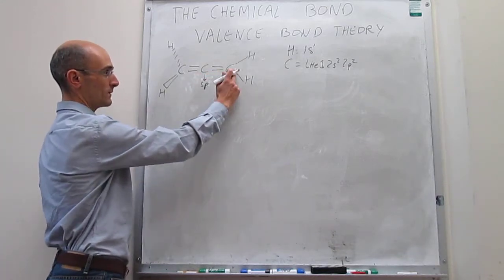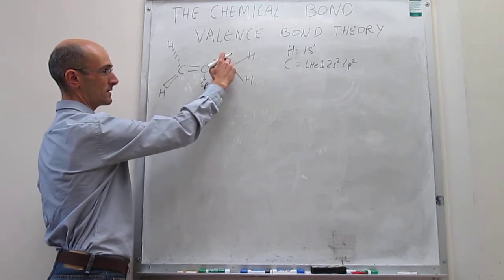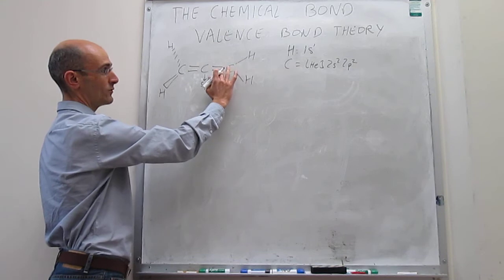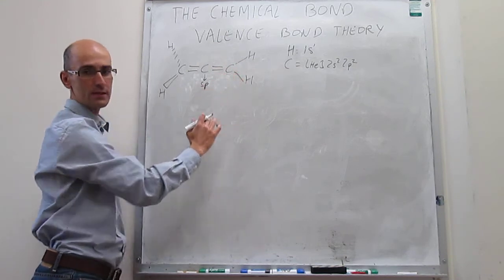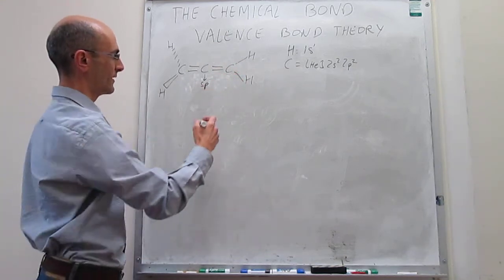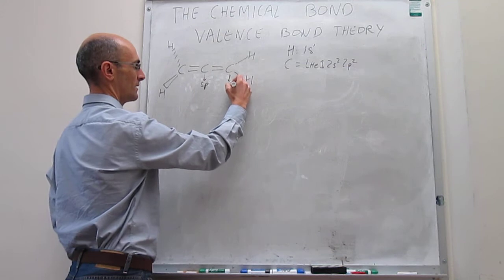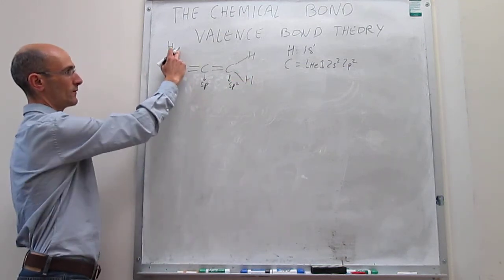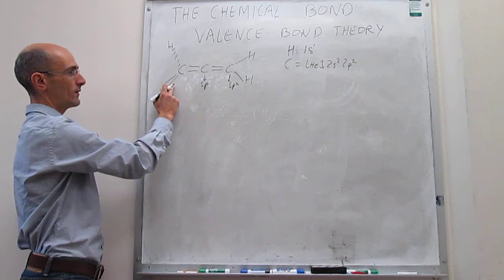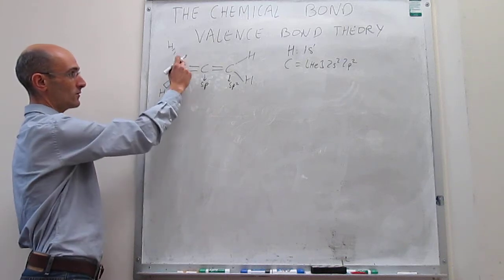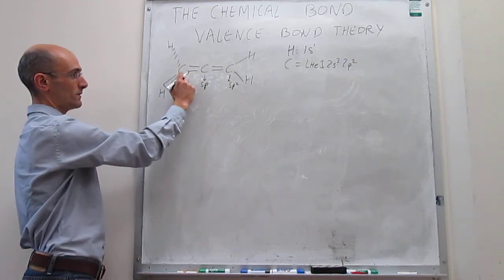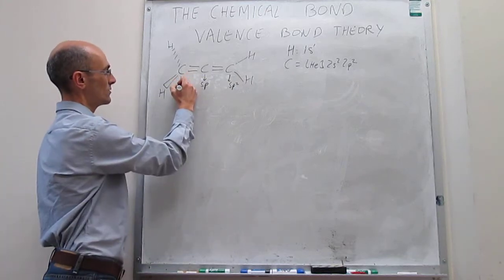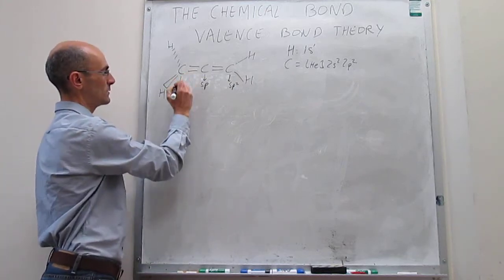What about the terminal carbon atoms? On each of these you actually have three connections, and that is a planar moiety with angles of about 120 degrees, which is a hallmark for sp2 hybridization. The same thing happens on the other terminal carbon — three connections with angles of 120 degrees between those bonds, which is also a hallmark of sp2 hybridization.